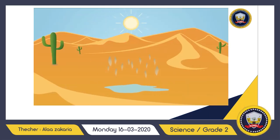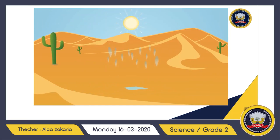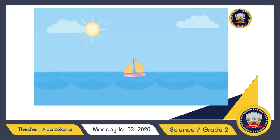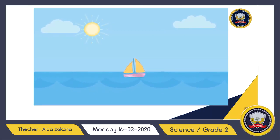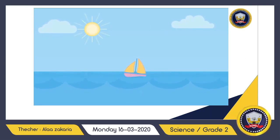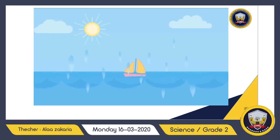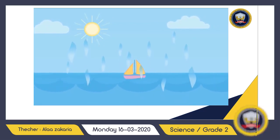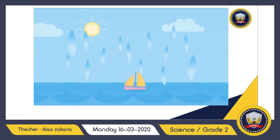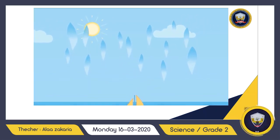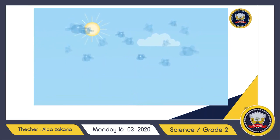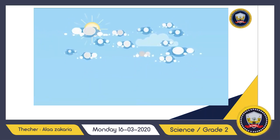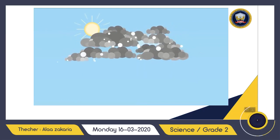Heat from the sun warms the water, turning liquid water into a gas, or water vapor, which rises into the air. This is known as evaporation. As the water vapor moves up higher and higher into the sky, it starts to cool down, turning back into tiny droplets of liquid water. This is known as condensation, and is what causes clouds to form.